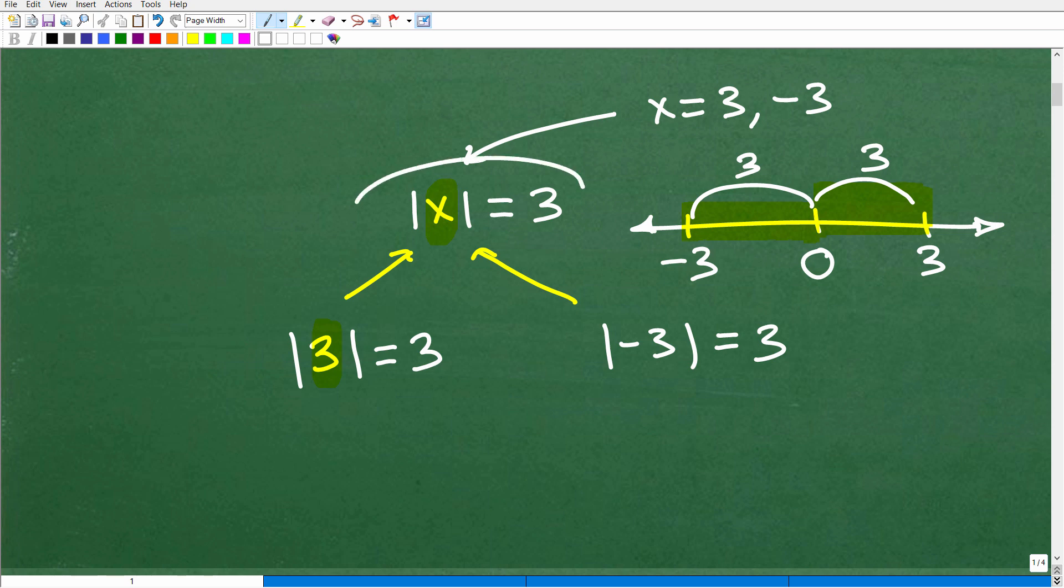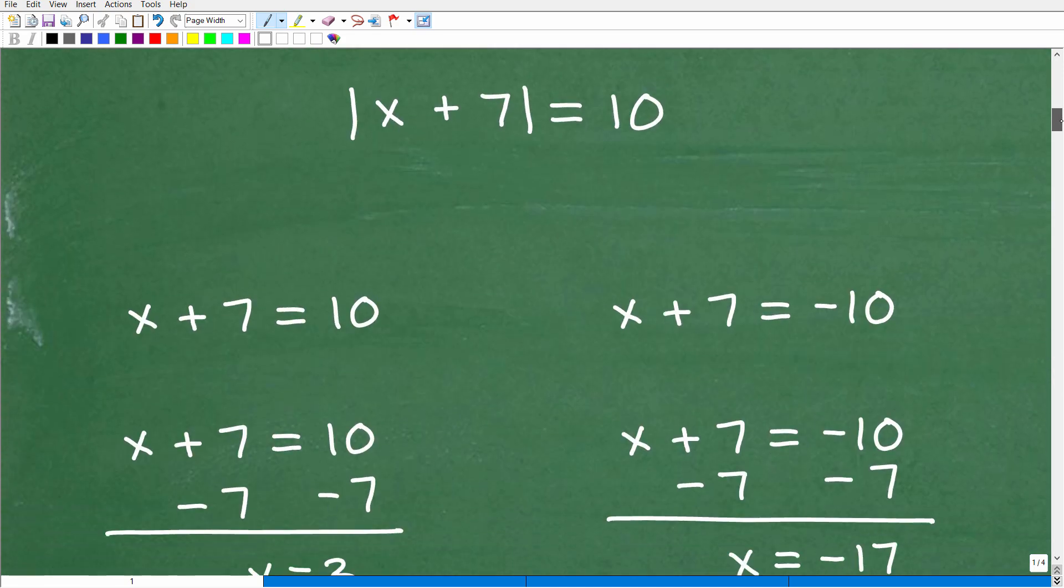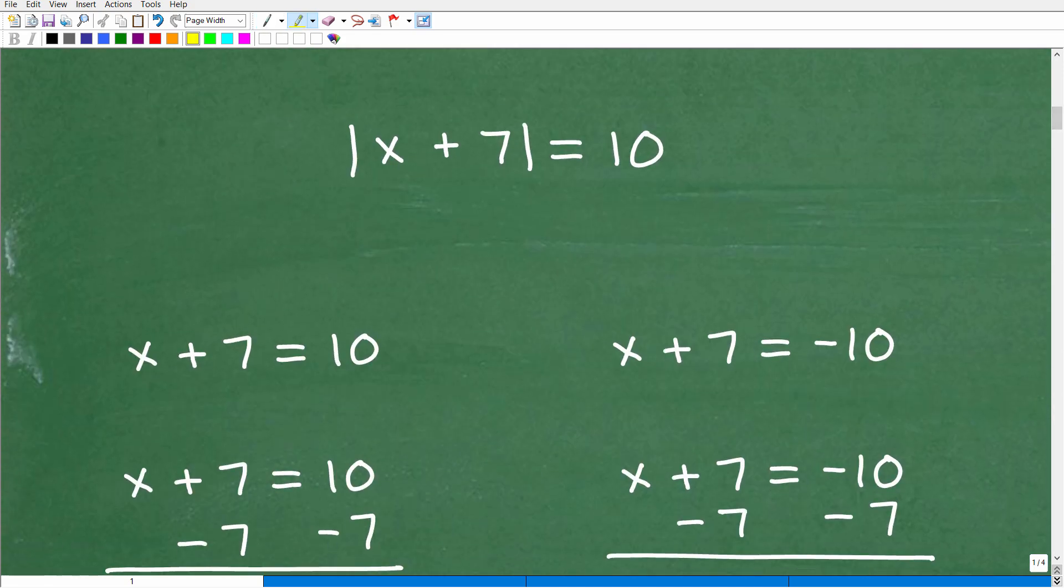This is a nice, lovely example of absolute value equation. Now I'm going to show you how we actually solve something more interesting like our problem right here. Okay, so here we have the absolute value of x plus 7 is equal to 10, okay? Now let's just forget this x plus 7 stuff right here real quick. Let's say I have the absolute value of something is equal to 10, okay?